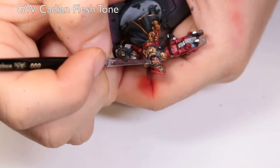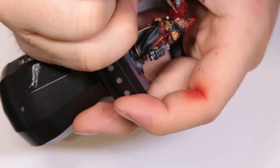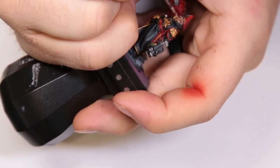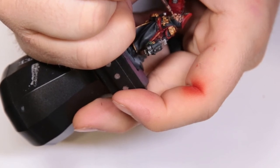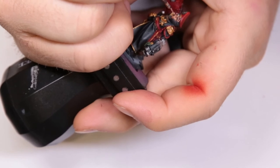On to Cadian Fleshtone, we're just coming back up and reestablishing some of the base tones that got washed out whenever we put the Reikland Fleshshade on. Make sure you hit his hand while you're at that step, just to kind of reinforce where the shadows are and where his flesh color is going to be.